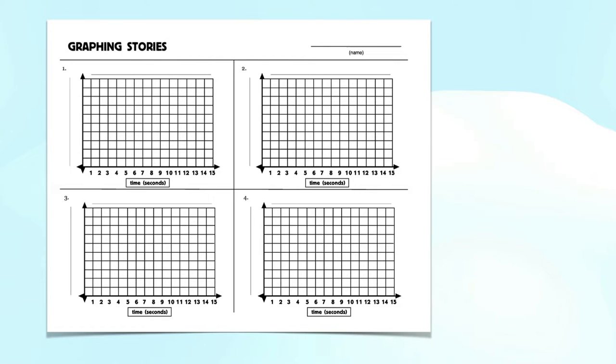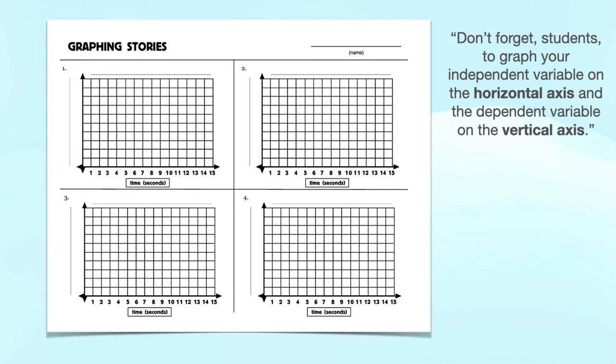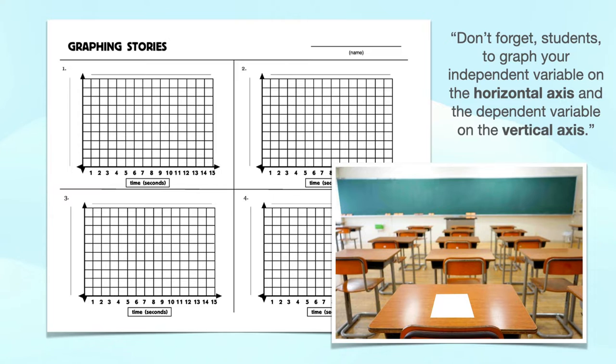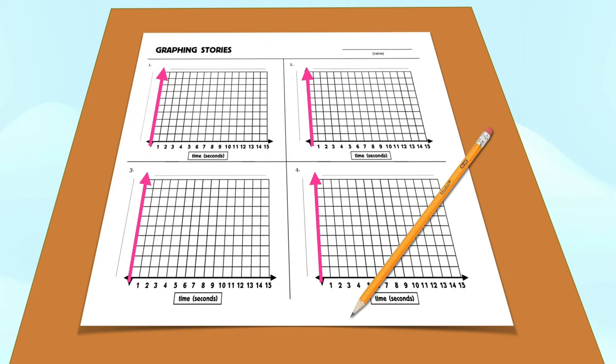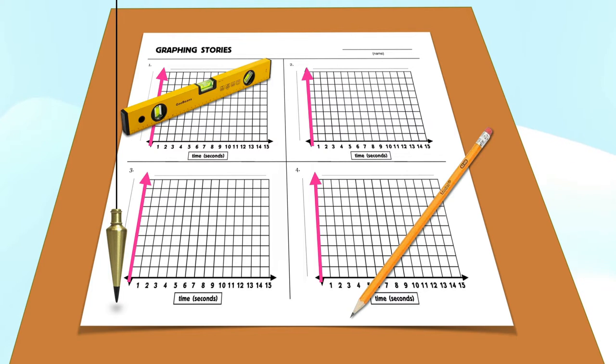Before we begin, consider a math worksheet on which a student will be graphing data from a physics demonstration. Students are reminded to use the horizontal axis for the independent variable and the vertical axis for the dependent variable. The student places the worksheet on the desk to begin work, and we can confirm that the desk is horizontal by using a spirit level. A plumb bob doesn't challenge this fact.